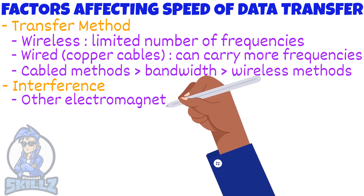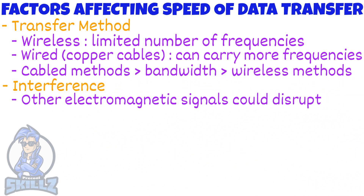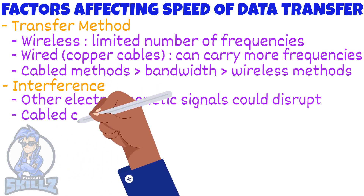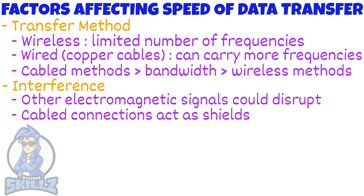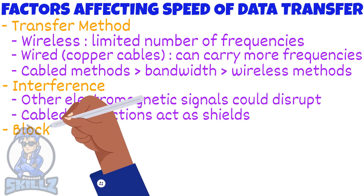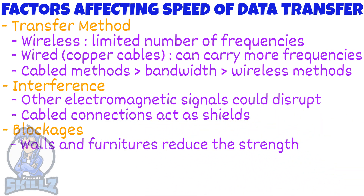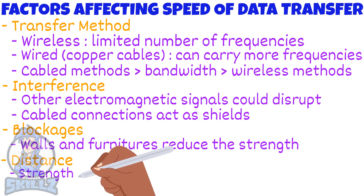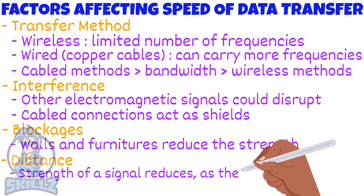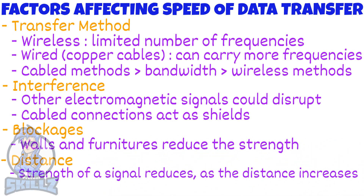Other electromagnetic signals could disrupt or interfere with wired and wireless signals. Cable connections can sometimes act as shields from interference by having the wires wrapped in a thin layer of metal. Blockages such as walls and furniture reduce the strength of wireless signals, reducing the available bandwidth. Distance also reduces the strength of a wired or wireless signal as the distance it has to travel increases.